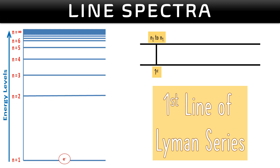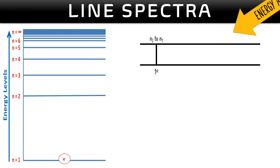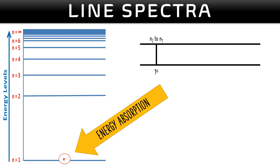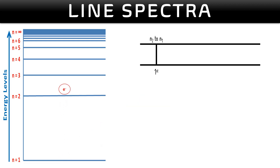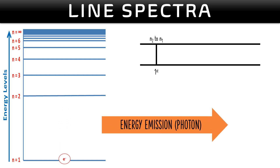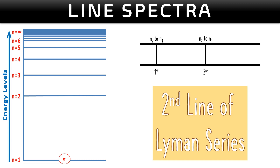You cannot see this line with your naked eyes. For the second line of Lyman series, the electron at the ground state n=1 absorbs energy and goes up to n=3, then drops to n=1. Energy is emitted as a photon and the second line of Lyman series is produced. To make the second line, the electron drops from n=3 to n=1.